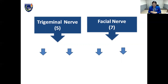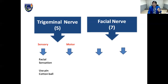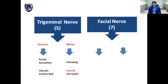Next are the trigeminal nerve — cranial nerve 5 — and the facial nerve — cranial nerve 7. Cranial nerve 5 is a sensory-motor nerve. Its sensory function pertains to facial sensation, assessed using pins run along the face and a cotton ball for the corneal reflex. The motor route is assessed by asking the patient to chew or clench the jaw or teeth, and also by testing the jaw jerk reflex — placing an index finger over the chin with the mouth slightly open and using a reflex hammer to stroke downward.